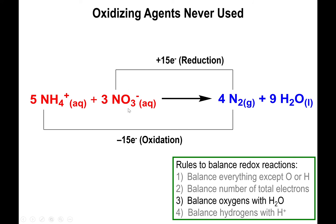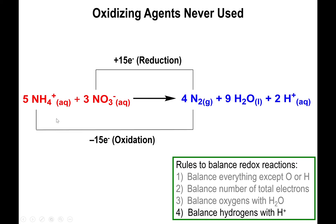We have a total of three times three, so nine oxygens on the left side. To balance the oxygens on the right side, we add nine waters. That means we now have 18 protons on the right side and 20 protons on the left side. So we need to add an extra two protons to balance the hydrogens. Checking charges: five plus one gives plus one, minus three gives minus two overall on the left side, and plus two overall on the right — so this works out.